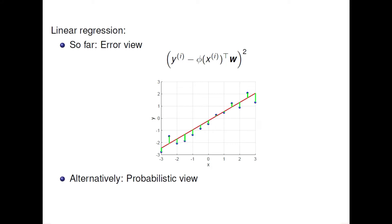So phi encompasses any information regarding whether you are modeling a linear model or trying to fit a quadratic model. In the squared error approach, we wrote this error function, summed over all the squared errors, and tried to minimize it. We used differentiation to find the optimal parameters w* and were able to get the linear red line that we saw.